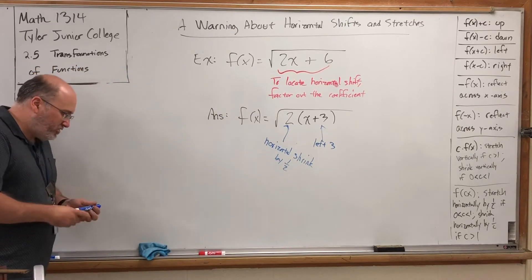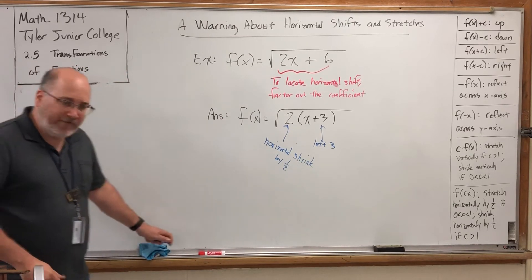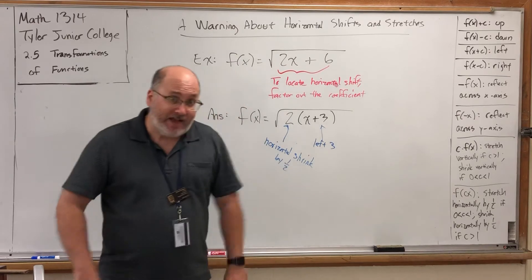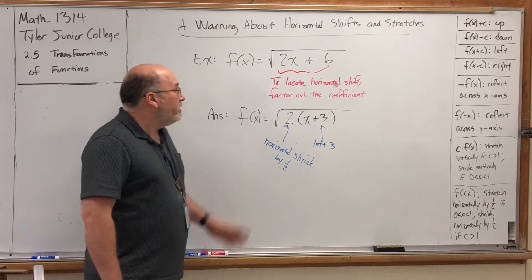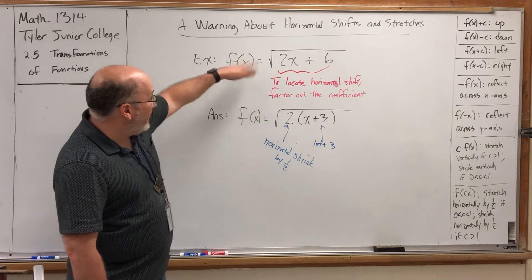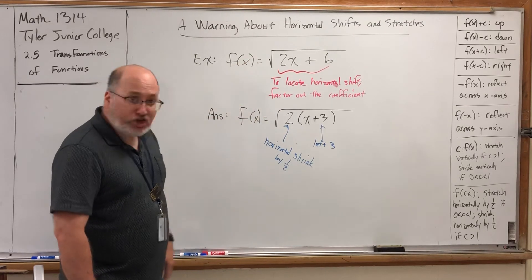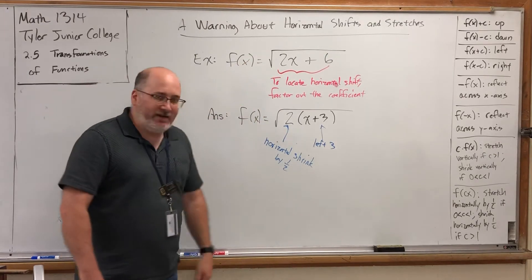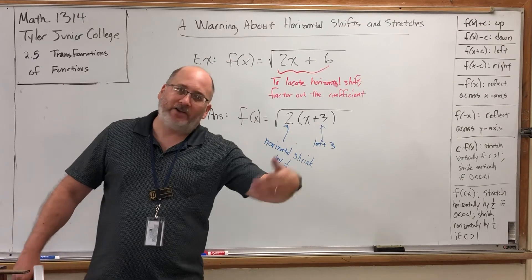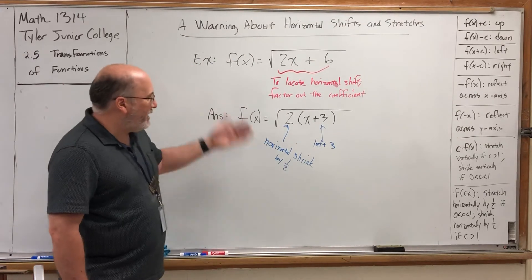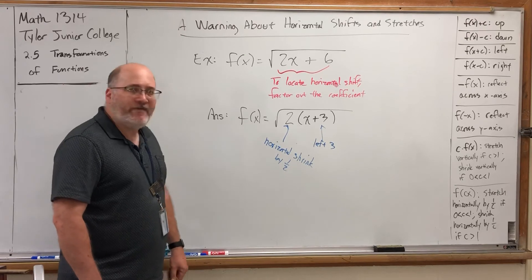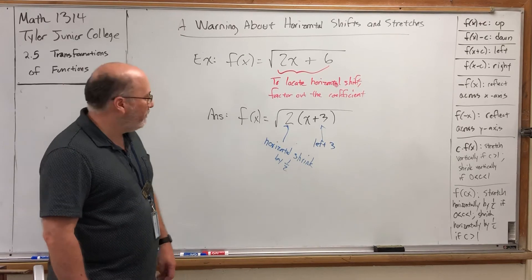This 2 still does what we said earlier — it will invoke a horizontal shrink by the reciprocal, one-half. So, very sneaky, very devilish. Now, for students in my class who happen to be watching this, there are no problems in your homework that have this issue. But again, if you are moving forward into trigonometry, pre-calculus, or calculus, this can and will show up, especially when you're graphing trigonometric functions.